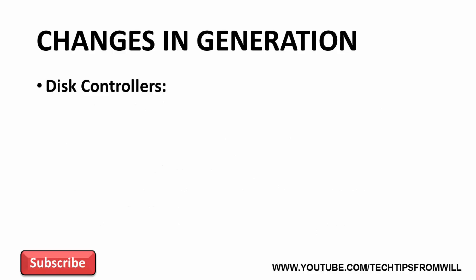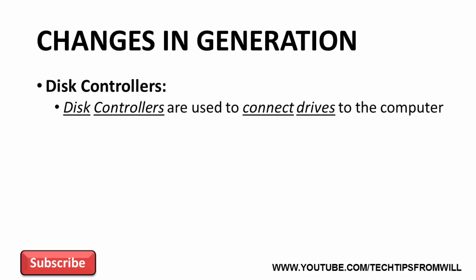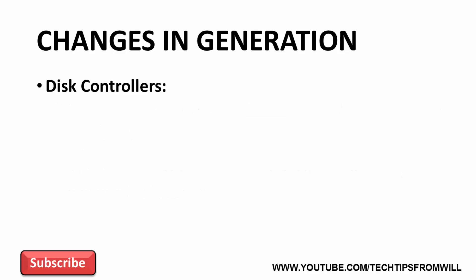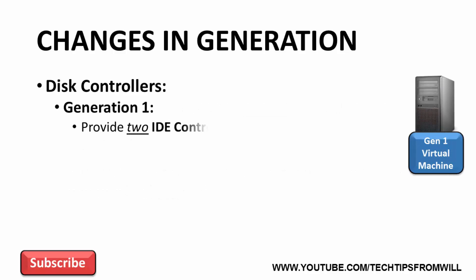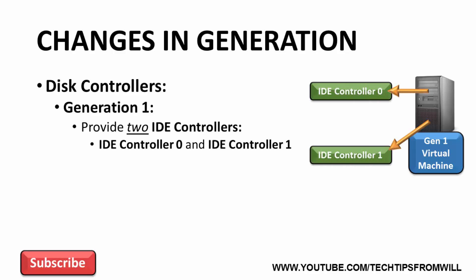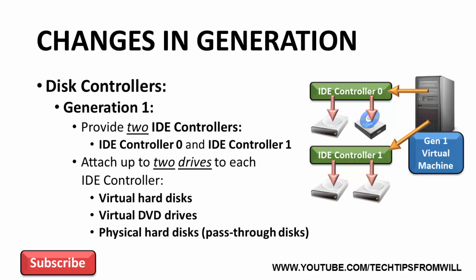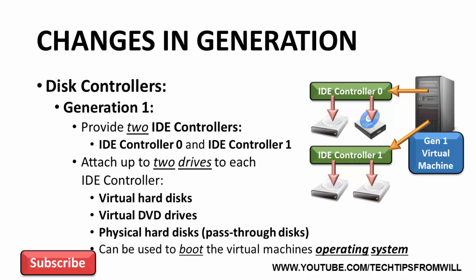The next change concerns disk controllers. In a regular computer, disk controllers are used to connect drives, such as hard drives and optical drives, to the computer. Both Generation 1 and Generation 2 virtual machines use emulated disk controllers. Generation 1 virtual machines provide two IDE controllers — IDE Controller 0 and IDE Controller 1. Just like a physical IDE controller, you can attach up to two devices to each, including virtual hard disks, virtual DVD drives and physical hard disks, also known as pass-through disks. IDE controllers can also be used to boot the virtual machine's operating system, which is why you should always connect your operating system drive to an IDE controller with Generation 1 virtual machines.